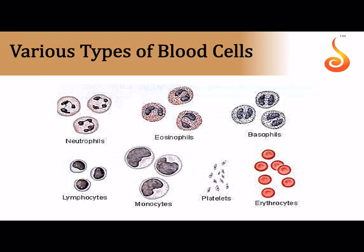About 5 to 5.5 million erythrocytes are present per millimeter cube of blood. RBCs live for about 120 days and are destroyed in the spleen, called the graveyard of RBCs. RBCs contain a red-colored pigment called hemoglobin which helps in oxygen transport. RBCs are biconcave and disc-like, and they do not have a nucleus at maturity - they lose their nucleus during early development.